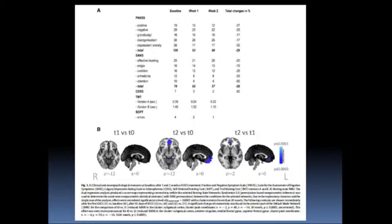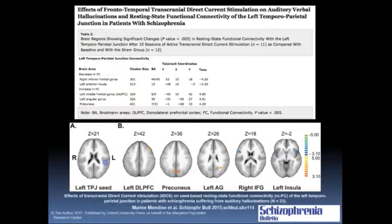And they also noticed that there were changes in the brain, and this is the table showing that, changes in the right inferior frontal gyrus, the left anterior insula. There's changes in functional connectivity of the middle frontal, the DLPFC, the left angular, and the precuneus.